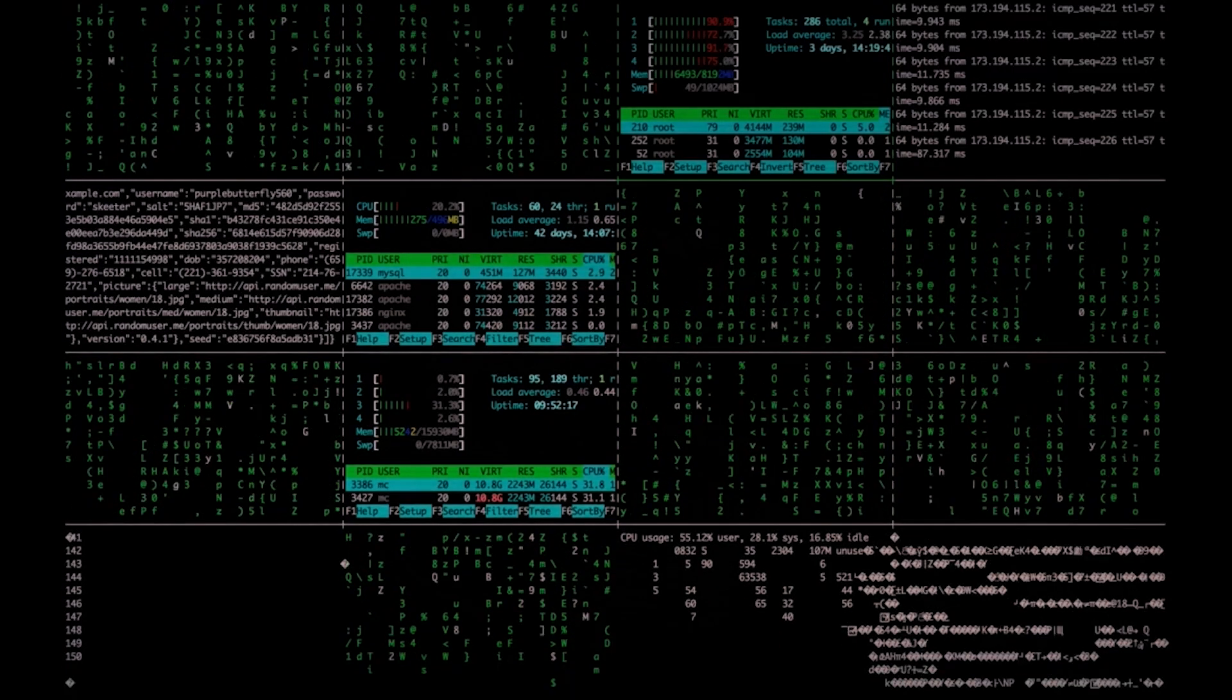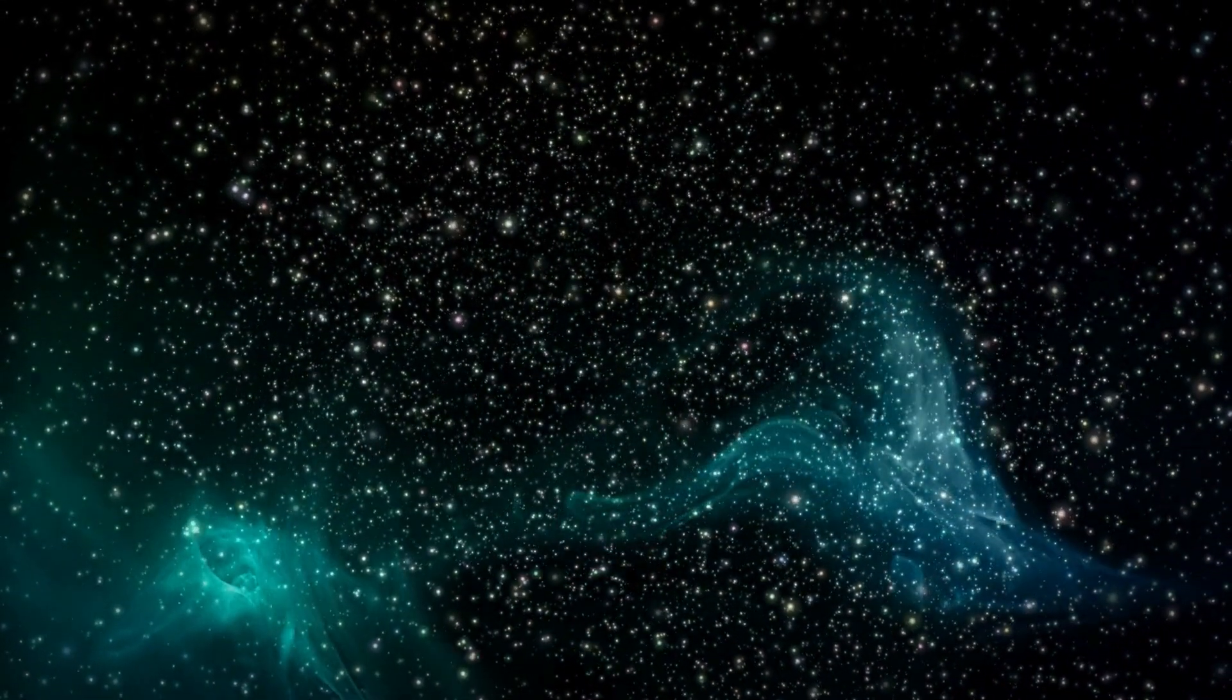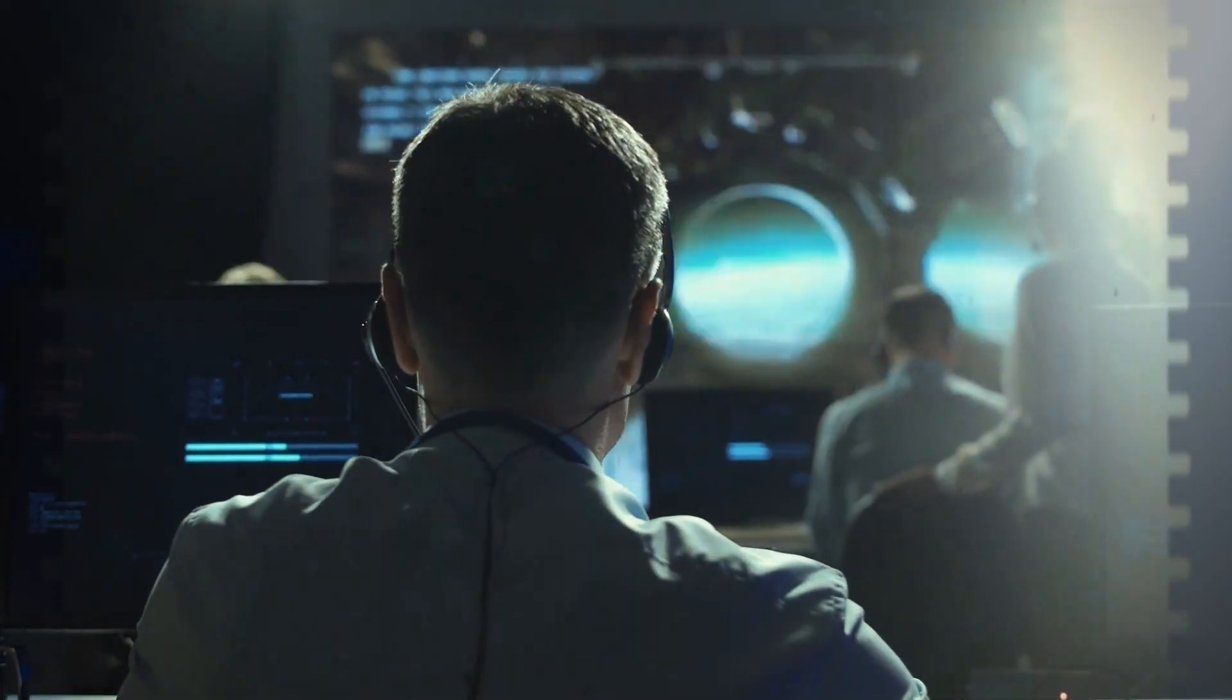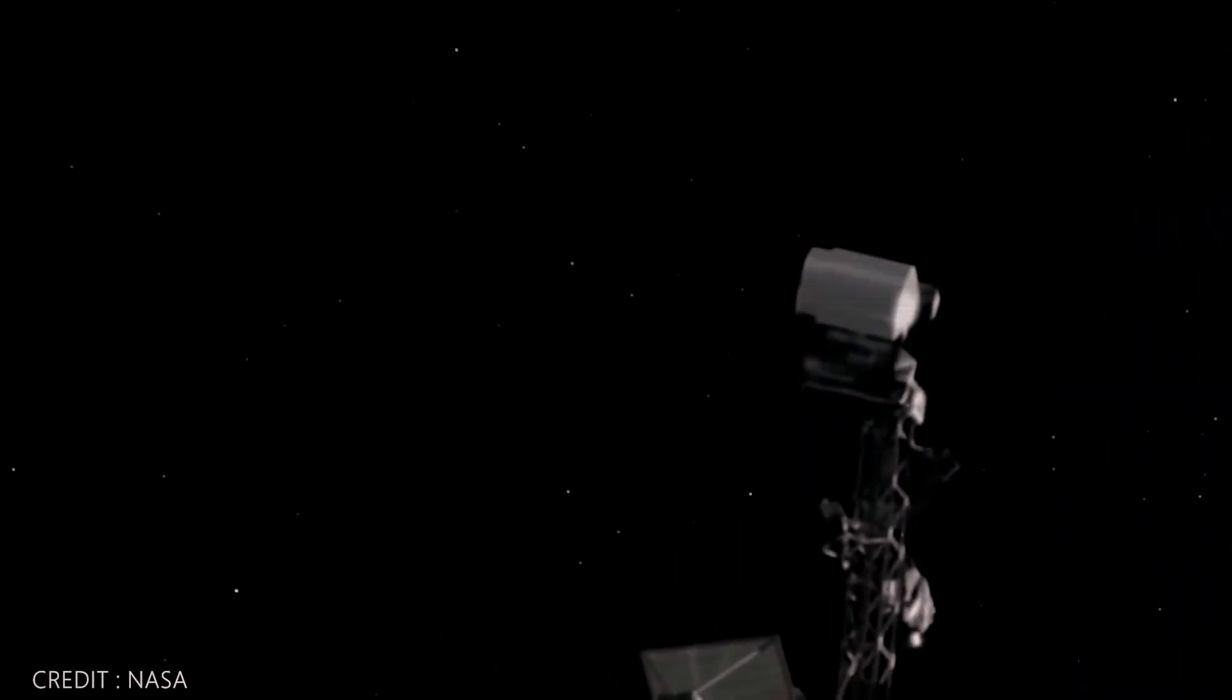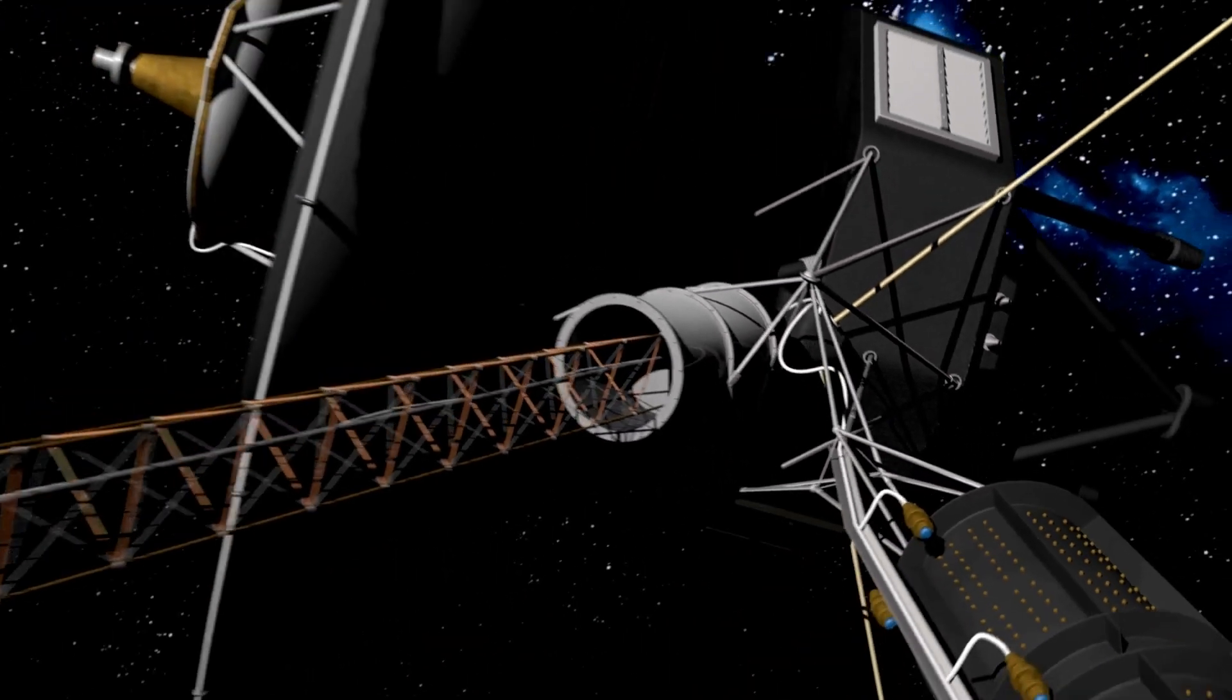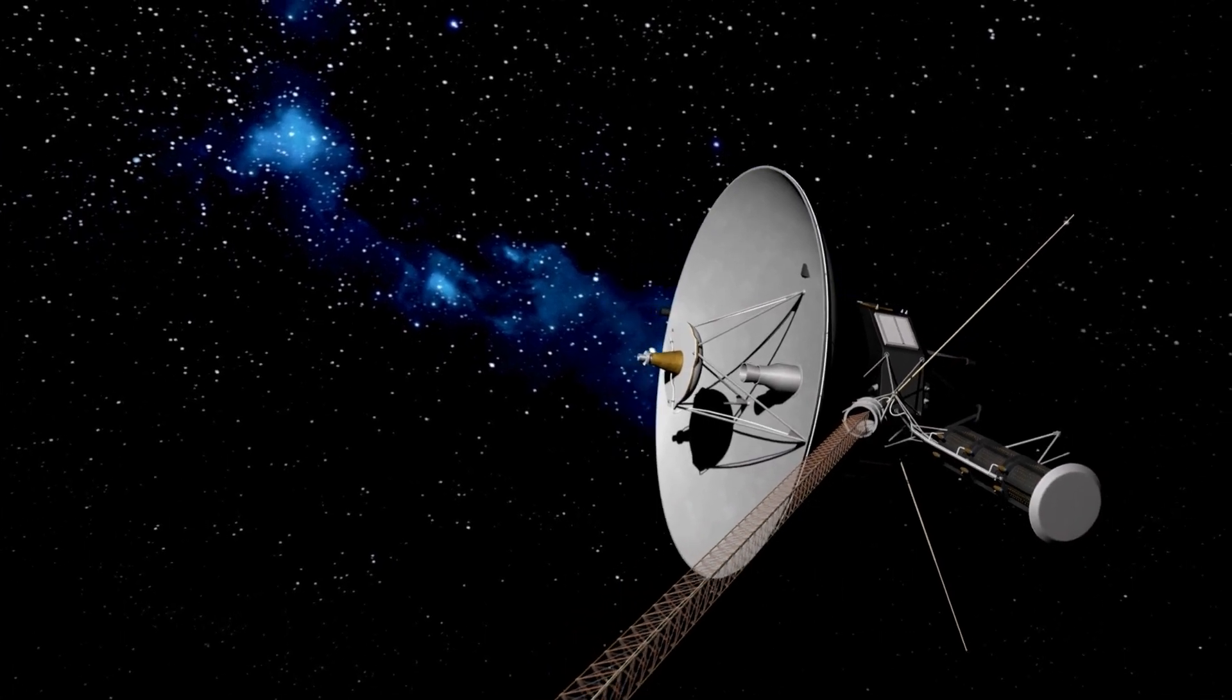For months, the messages coming from Voyager 1 back to Earth have been puzzling to say the least. This trailblazer, navigating the depths of interstellar space, began transmitting data that even NASA's brightest minds found baffling. It wasn't just random noise. It seemed as if Voyager had suddenly lost its ability to communicate in a language we could understand, transforming its observations into a jumble of ones and zeros.